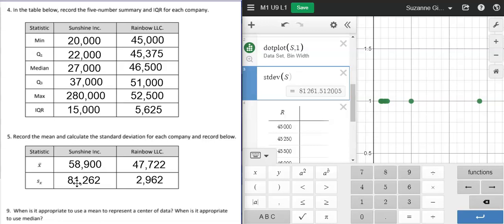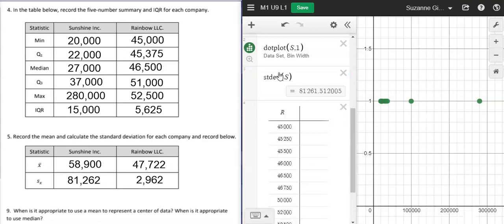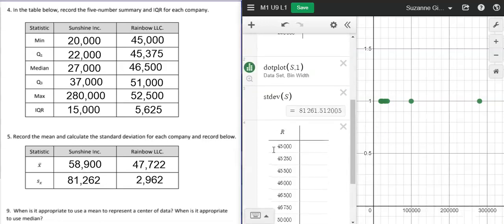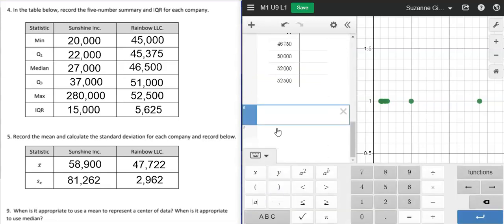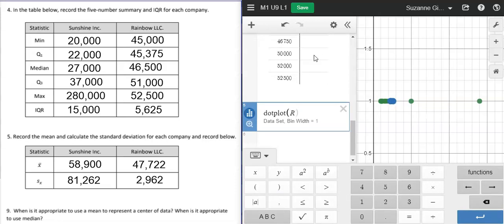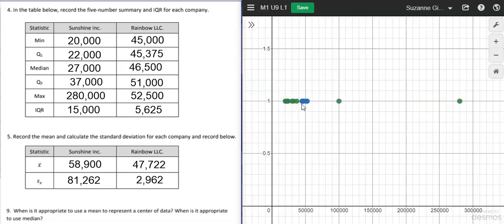The standard deviation, this number is so large compared to this one because the salaries are so spread out. If I, again, I'm going to put my other dot plot, these blue dots right here represent the Rainbow. So everybody makes really close to the same. The green dots is for Sunshine, and there's a really big spread, a lot of variation in what their employees make. Somebody gets paid a lot of money.